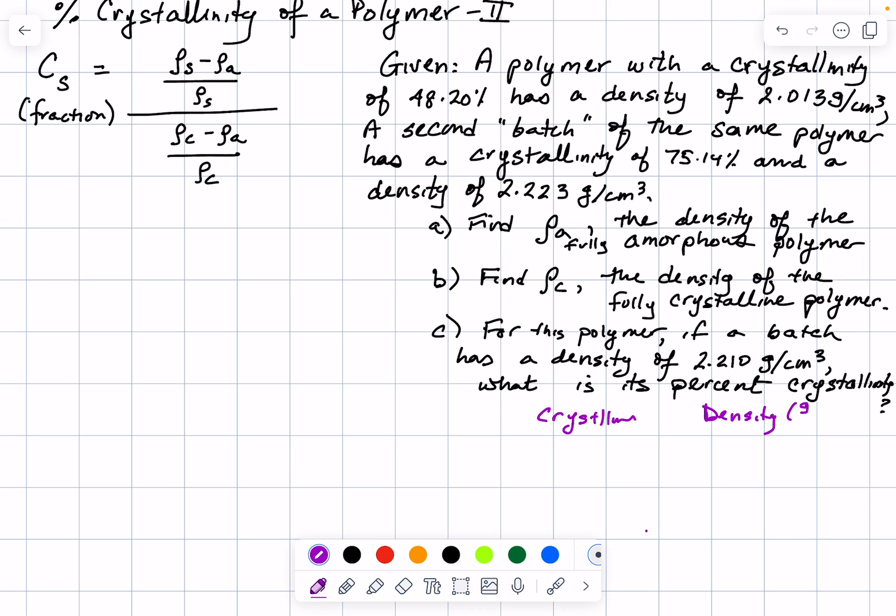We're always going to be in units of grams per centimeter cubed, but I'm not going to write them out every single time. The big picture is that when we're 100% fully crystalline, or when the fraction of its crystallinity is one, the density of the polymer is labeled ρc. When we're fully amorphous, it's 0% crystallinity, and we label that entity the amorphous density ρa.